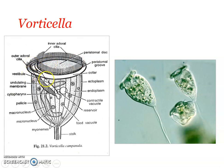The peristomal disc is fused with the collar on one side, so the peristome does not form a complete ring. The peristomal disc can be withdrawn when the peristome contracts and covers it. Between the peristome and the peristomal disc is a permanently open space known as the vestibule, or infundibulum. From the vestibule arises a very narrow cytopharynx that leads inward into the body. The cytopharynx has no cilia, unlike Paramecium.